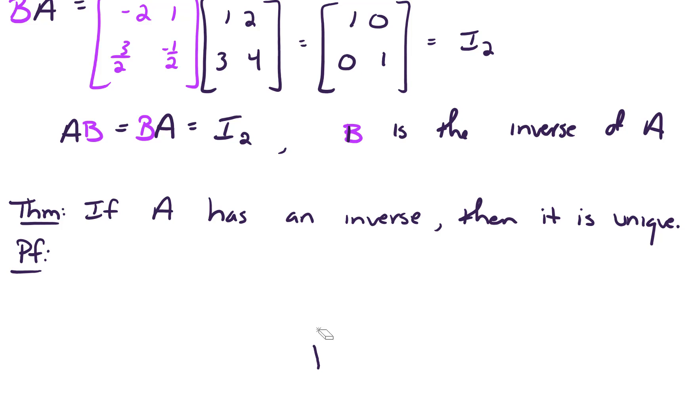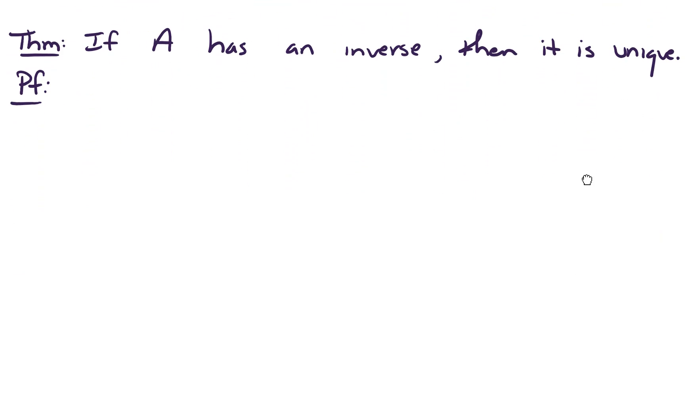Proof. Let's suppose that B and C are inverses of A. And so we'll do some work and hopefully show that B equals C. Hence, if there's more than one inverse, in fact, they were equal.